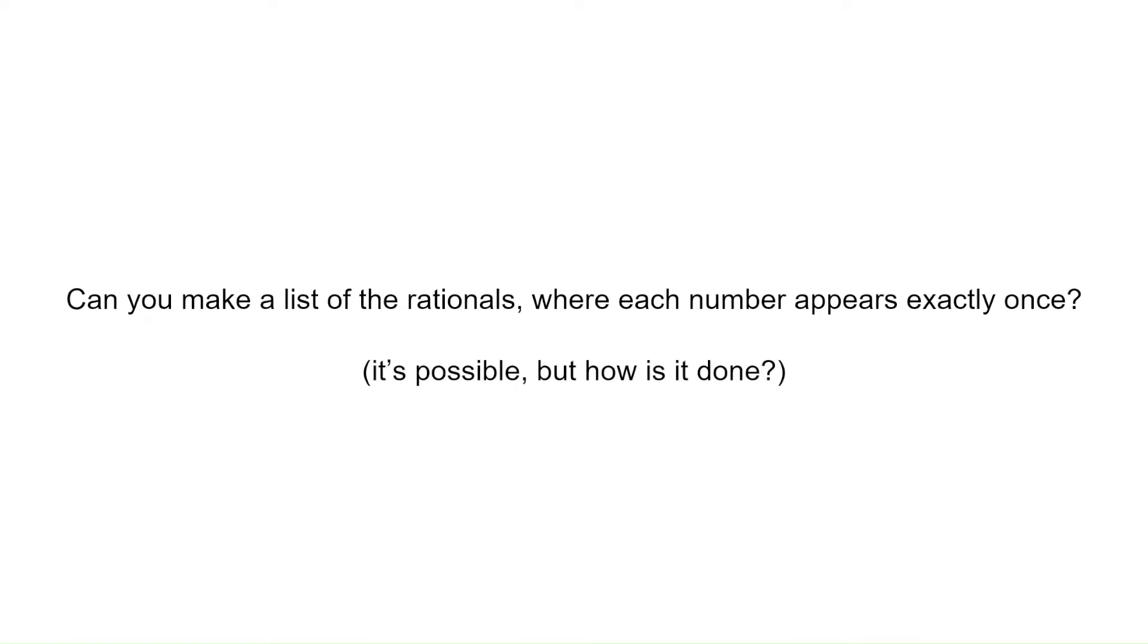Here's the motivating question. Can you make a list of the rationals where each number appears exactly once? The rational numbers are countable, so this must be possible. But the approach is important.